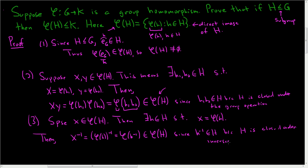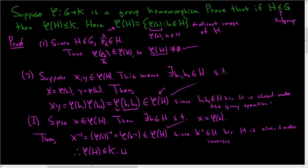So we've shown that the direct image is not empty, we've shown that the direct image is closed under the group operation, and we've shown that the direct image is closed under inverses. So we've shown the three things required to be a subgroup, and therefore the direct image of H is a subgroup of K. I hope this helps.